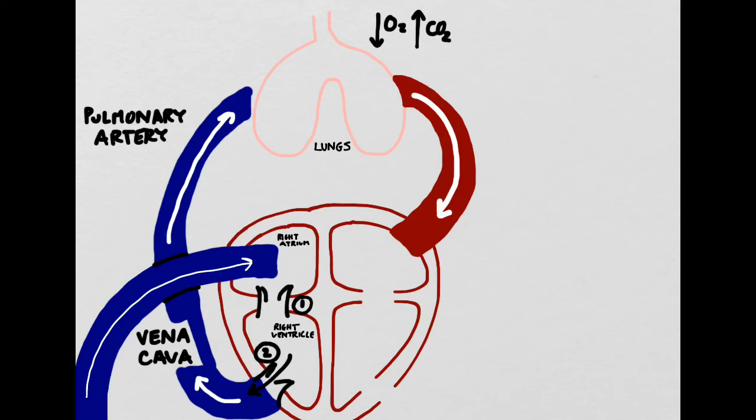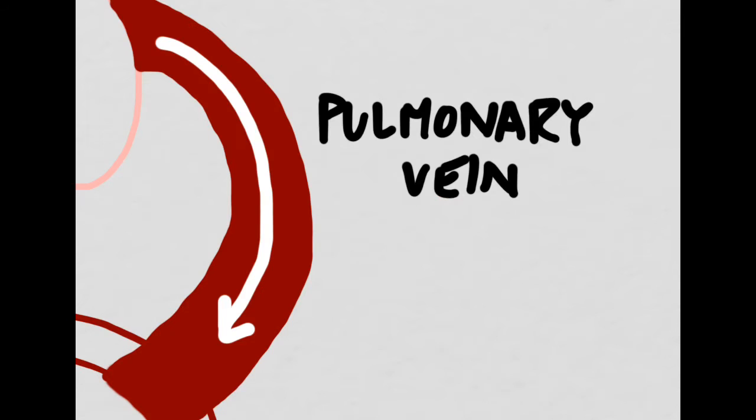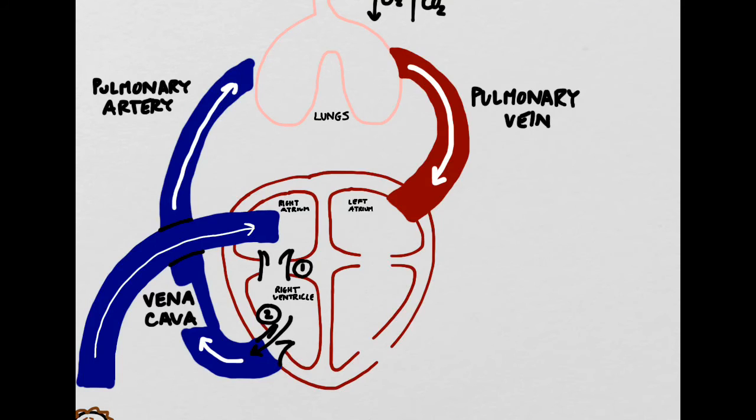The blood will then exit the lungs using a new blood vessel which we're going to call the pulmonary vein. Remember that the pulmonary vein is technically still a vein because it moves towards the heart rather than away from it, even though it carries oxygenated blood. The pulmonary vein empties into the left atrium of the heart.